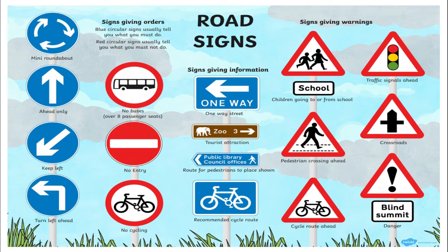The middle signs are rectangular shapes, and these give you information. The first one says 'one way' — it means the road you're approaching is only one way. The second one means there's a zoo ahead, which is a visitor or tourist place. The third sign means a public library — giving you the location of a public library. The one at the bottom means a cycle route — an instructional sign showing there's a cycle route.